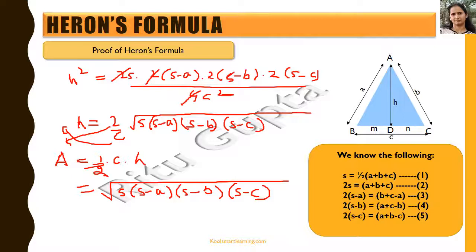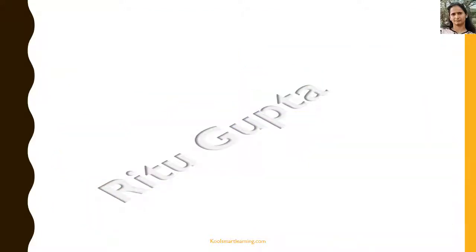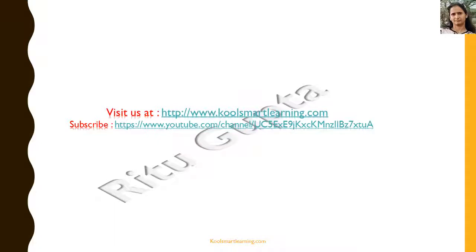The triangle taken in this figure is an acute-angled triangle, but the same approach can be used to prove Heron's formula for an obtuse-angled triangle as well. For any type of triangle, the same technique applies and the formula always holds. I hope you enjoyed the session — if you find it useful, please like and share it with your friends, visit our Cool Smart Learning website, and subscribe to the channel for updates on new sessions. Thank you.